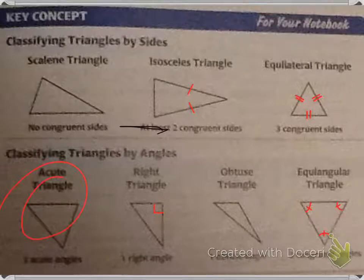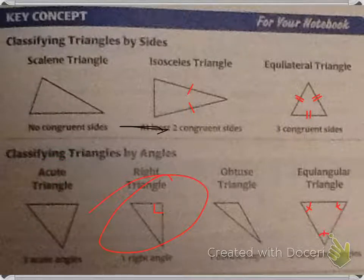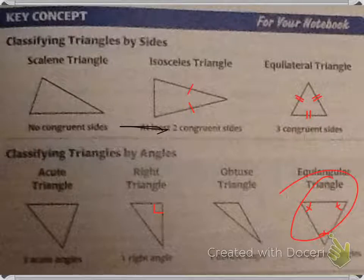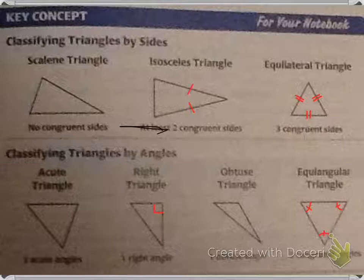Now classifying triangles by angles: an acute triangle has three acute angles, a right triangle has just one right angle, an obtuse triangle has one obtuse angle, and an equiangular triangle — 'equi' meaning equal, 'angular' referring to angles — means three congruent angles.